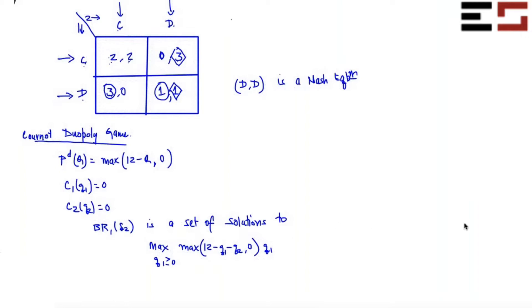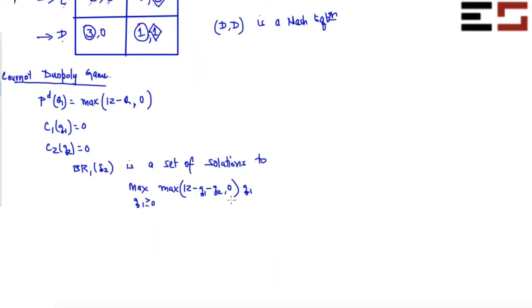What you got is partially correct — there's no problem in what you've done, but it's not complete. Notice that we have the function max(12 minus Q1 minus Q2, 0), which you need to take into account fully. This function says that if Q1 plus Q2 is greater than 12, then the price will be 0 and your revenue will be 0. If Q1 plus Q2 is less than 12, then the price will be positive. We have to think in those lines to figure out the best response functions.